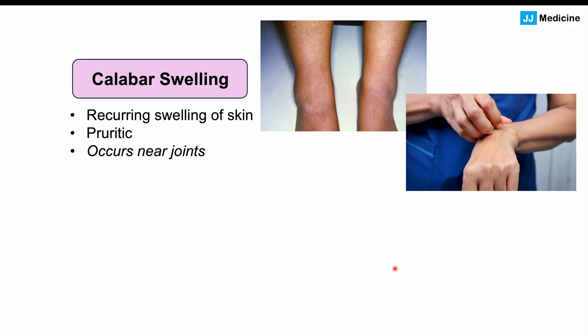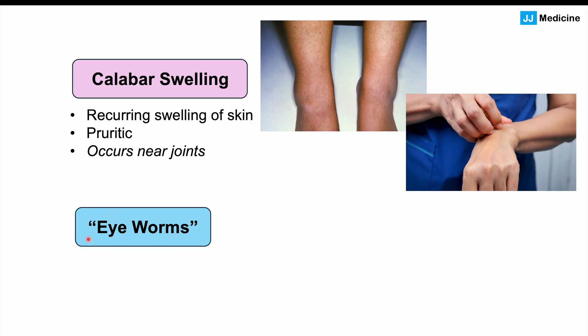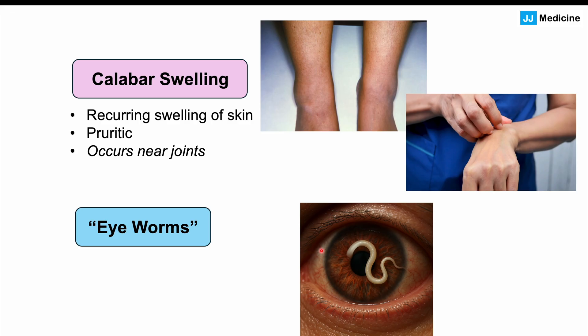In some cases, patients can actually see a worm moving under the skin, which can be very disconcerting. Patients can also have eye worms, where the worm itself is in the conjunctiva of the eye and is literally traversing the conjunctiva. Patients themselves may actually see the worm crossing the conjunctiva — a worm moving through their vision. A clinician can also see this and could remove it, but oftentimes the worm will leave the eye and move into a different part of the body.